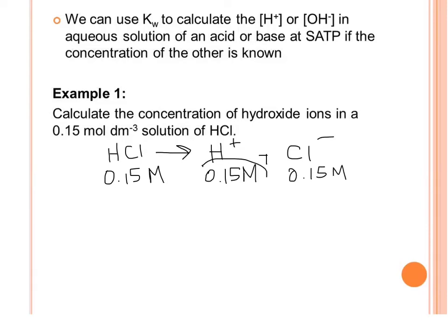Since we have the concentration of H⁺, to find the concentration of OH⁻, we use H⁺ times OH⁻ equals Kw. We plug in 0.15 for H⁺.